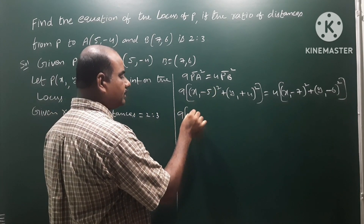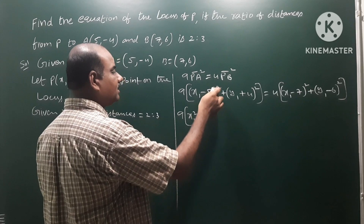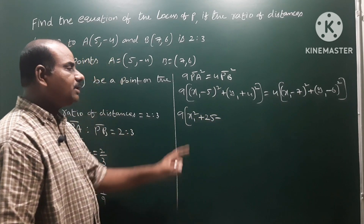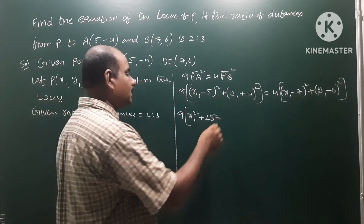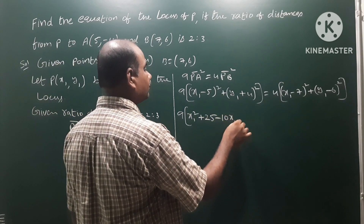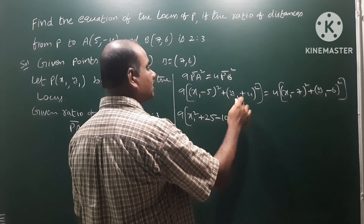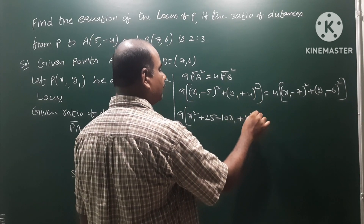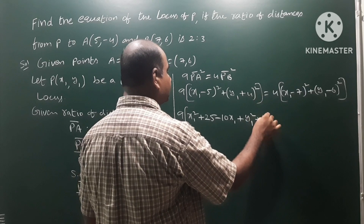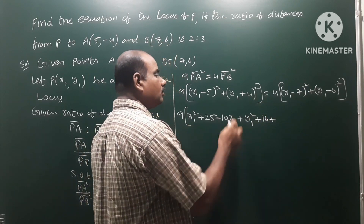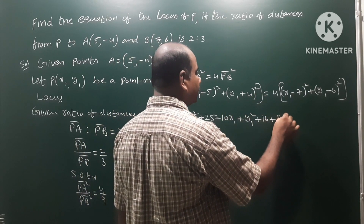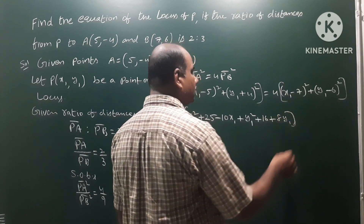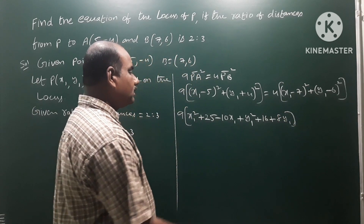Expanding the left side using the formula (a minus b) whole square equals a square minus 2ab plus b square: x1 square plus 25 minus 10x1, plus y1 square plus 16 minus 8y1. Multiplied by 9 on the left side.